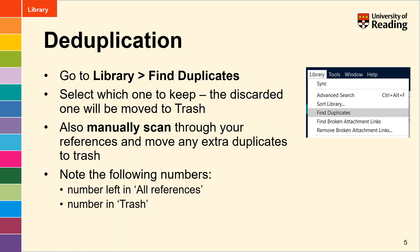Once you've got all your references into your library, the first thing to do is deduplicate, because the same article or reference may have come up on multiple databases. EndNote has an automated tool — just go to the Library menu and select Find Duplicates. This will take you through comparing each of the duplicates so you can choose which one to keep, for example checking whether journal names are in full or abbreviated and selecting the one with the full journal name. It's not a perfect tool though, so once you've used it, also manually scan through your references sorted by author, and move any remaining duplicates to trash.